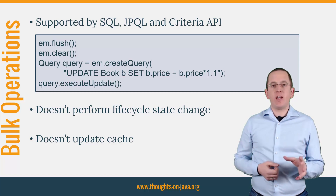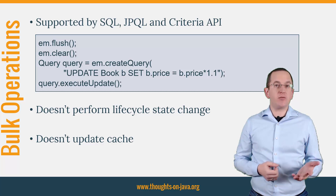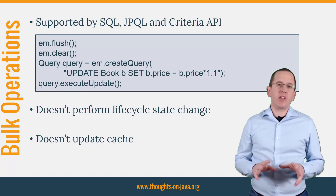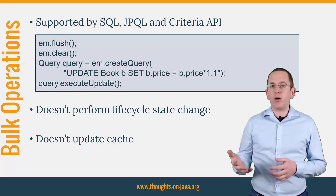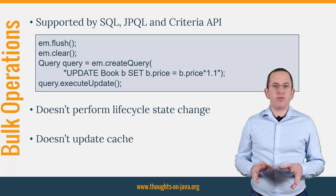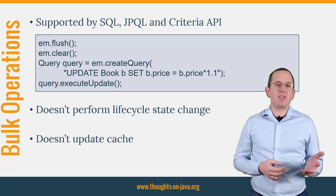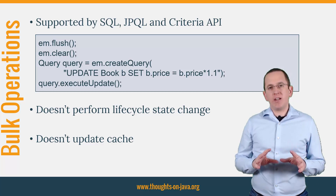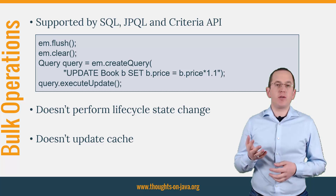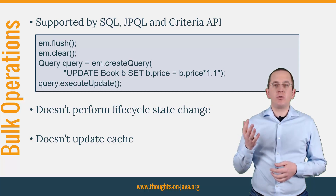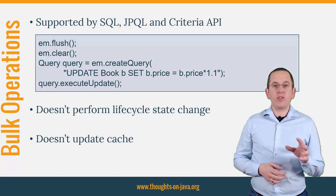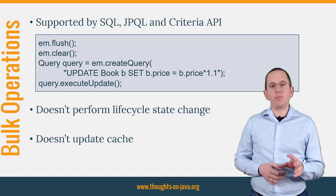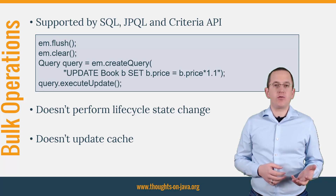Luckily, you can do the same with JPA and Hibernate using a JPQL, native SQL, or Criteria Query. But it has a few side effects: you perform the update or delete operation in the database without using your entities, which provides better performance but ignores the entity lifecycle and Hibernate can't update any caches. You shouldn't use any lifecycle listeners, and you need to call the flush and clear methods on your EntityManager before executing a bulk update. The flush method forces Hibernate to write all pending changes to the database, and the clear method detaches all entities from the current persistence context.